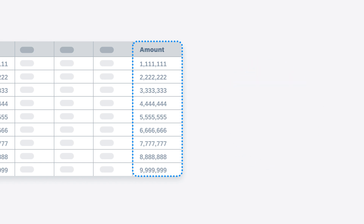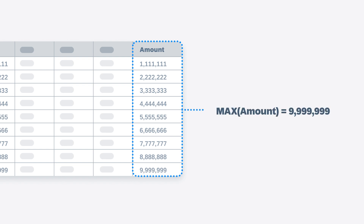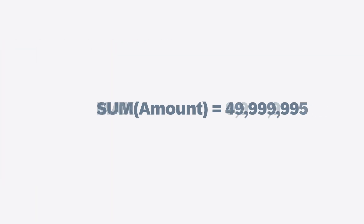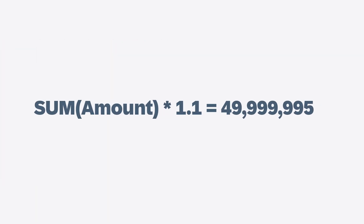Different aggregation types can be used with these values to determine the average revenue, or the minimum revenue, or the maximum revenue. And the values can be combined with other values or functions in formulas to create calculated measures that don't already exist in your data.